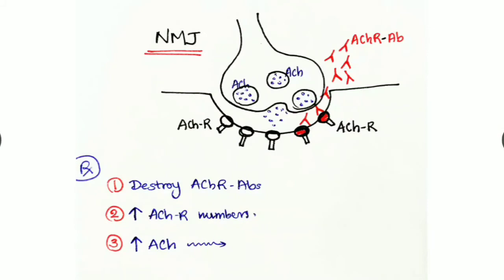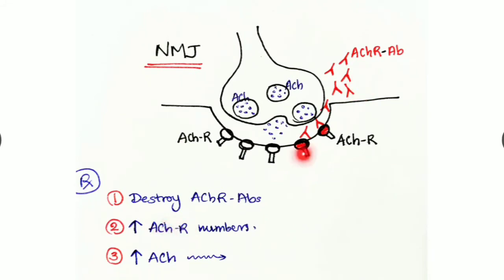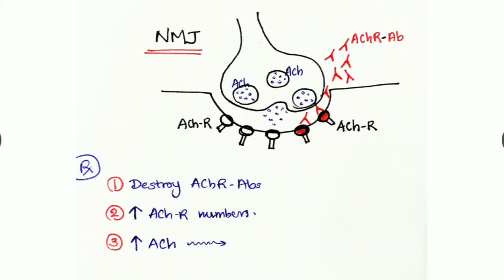Treatment options are: first, destroy the acetylcholine receptor autoantibodies; second, increase the number of acetylcholine receptors; or third, the most feasible option, increase the concentration of acetylcholine neurotransmitters despite the decreased receptors and presence of antibodies.